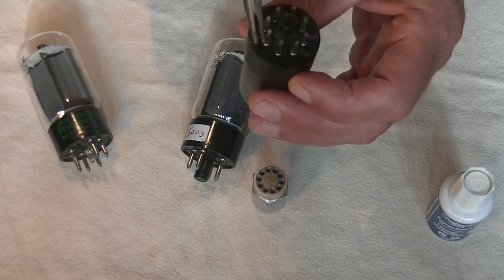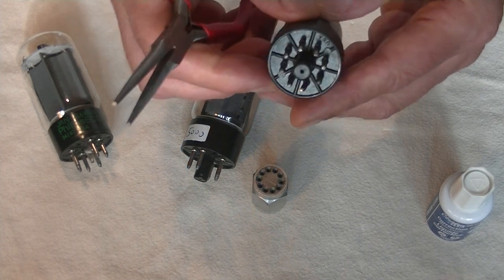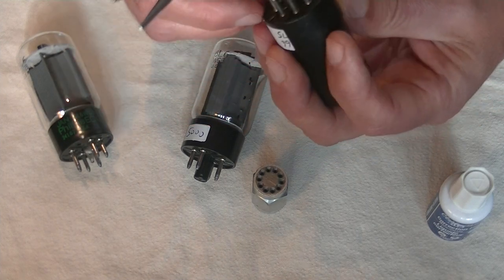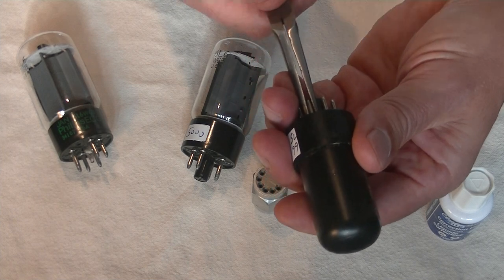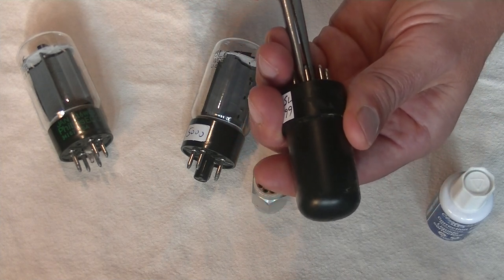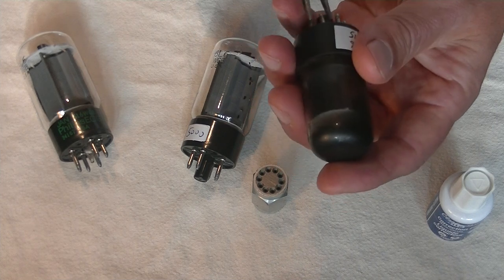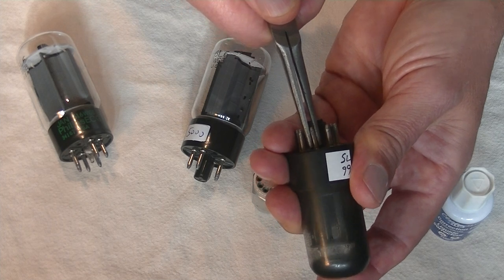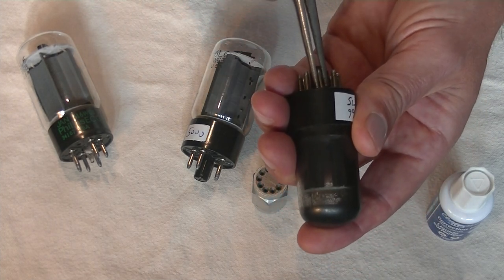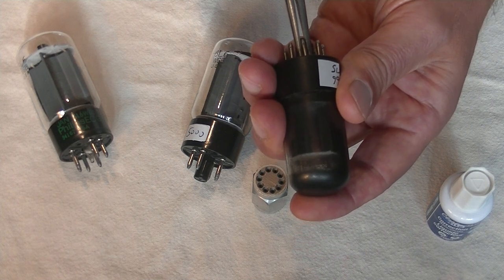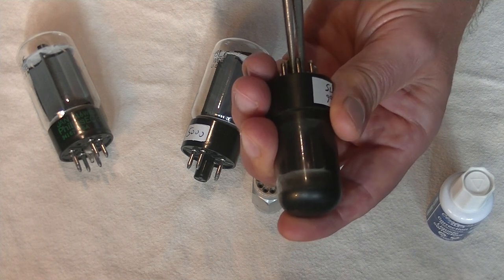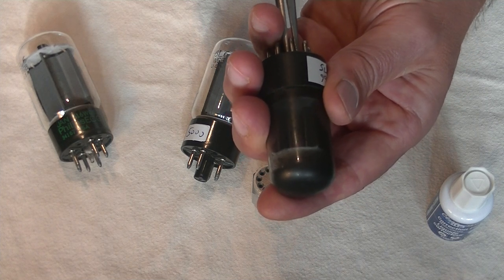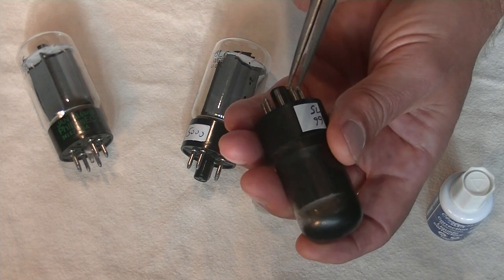Octal tubes rarely have bent pins. But when they do, the same thing applies. Get in here with the pliers and very carefully just straighten it out. I've never seen a pin straightener for an octal tube, so it's always needle nose pliers all the way. Oh, there's a bent pin. So, just ease it back into place. Don't force it and find out where the bend is.